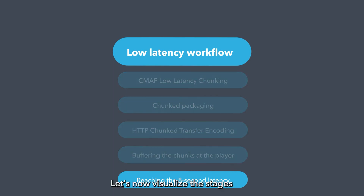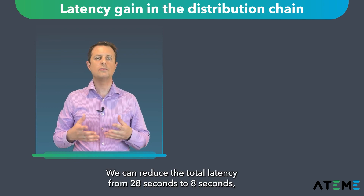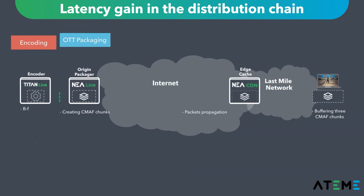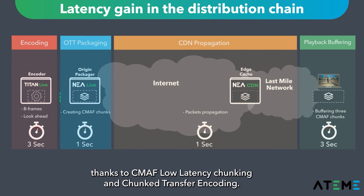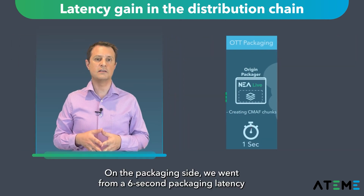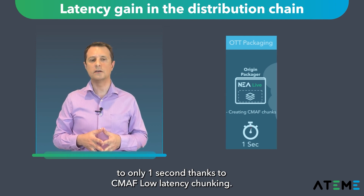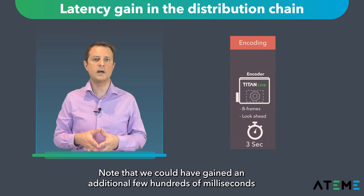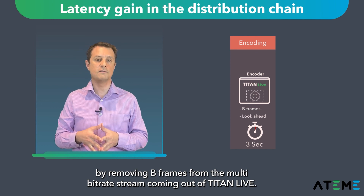Let's now visualize the stages where most of the latency gain happened in our distribution workflow. We can reduce the total latency from 28 seconds to 8 seconds, thanks to CMAF low latency chunking and chunk transfer encoding. On the packaging side, we went from 6 seconds packaging latency to only 1 second, thanks to CMAF low latency chunking. Note that we could have gained an additional few hundred milliseconds by removing B-frames from the multi-bitrate stream coming out of Titan Live.